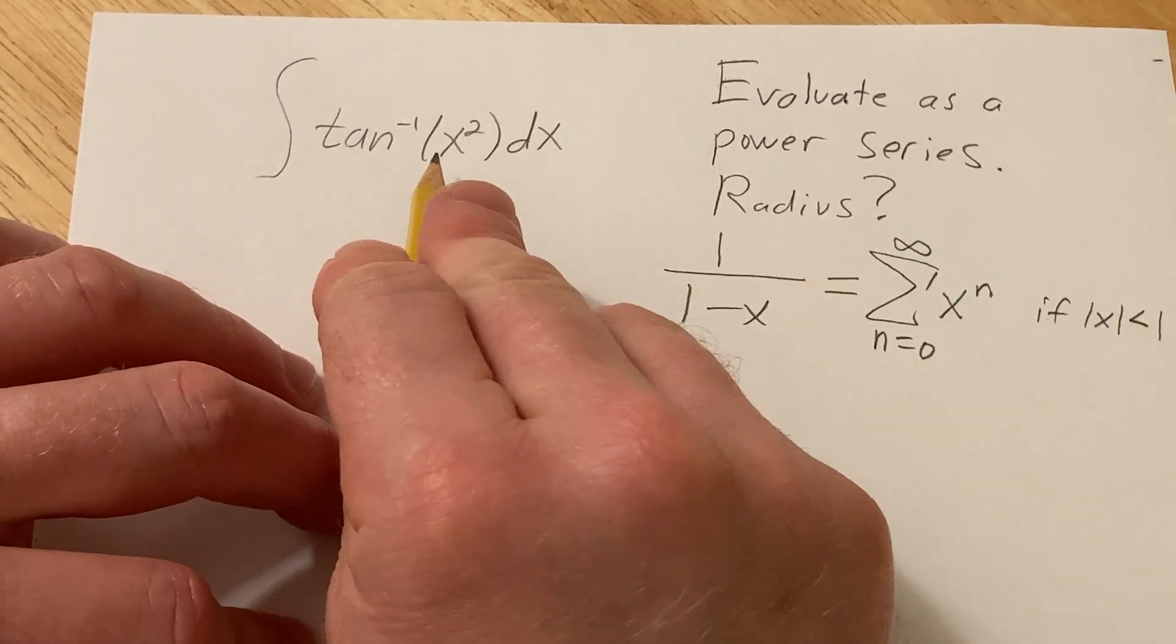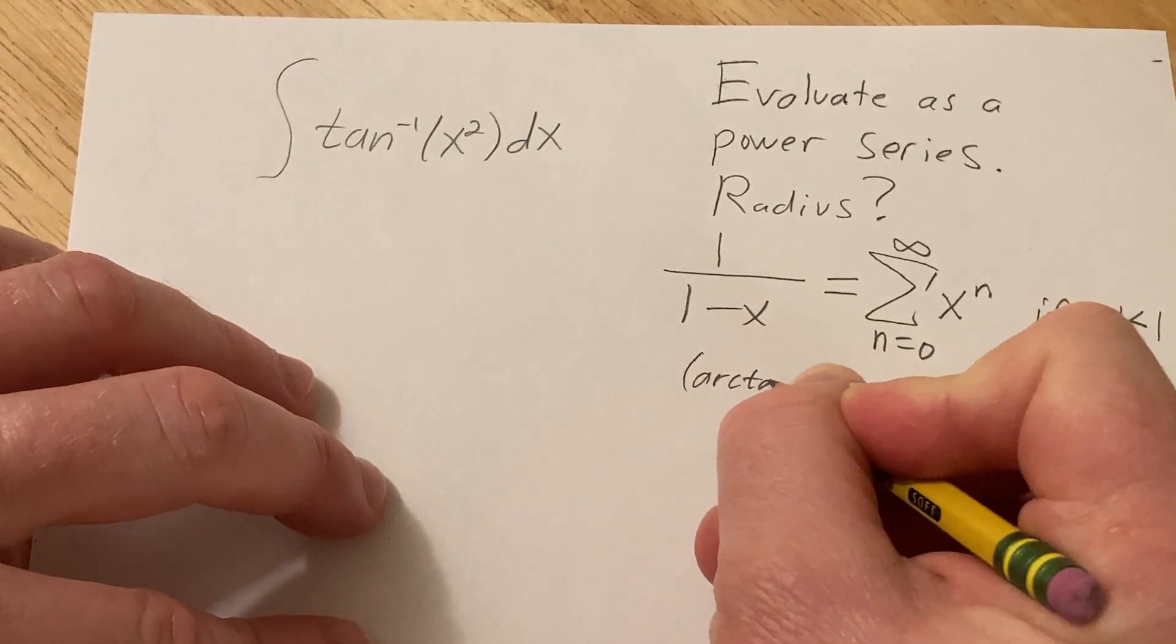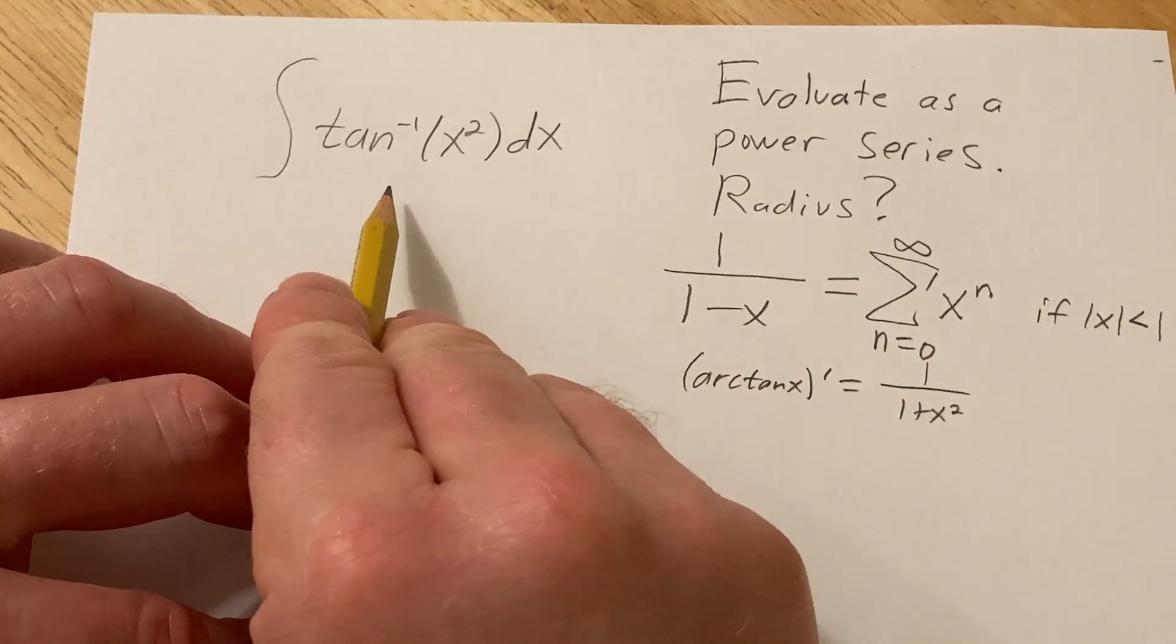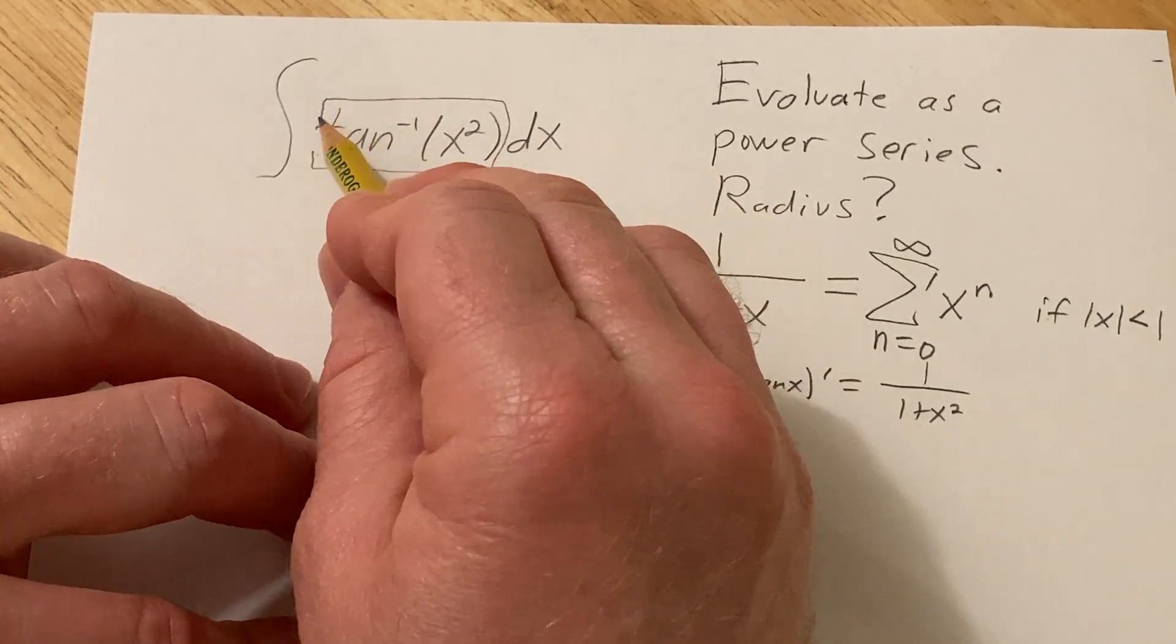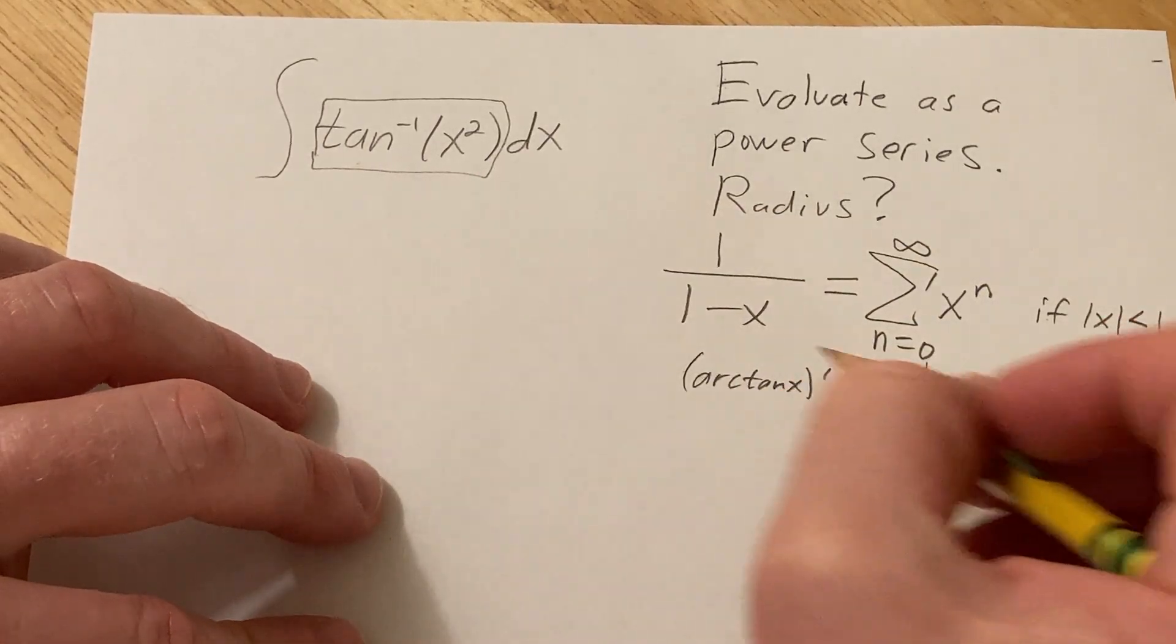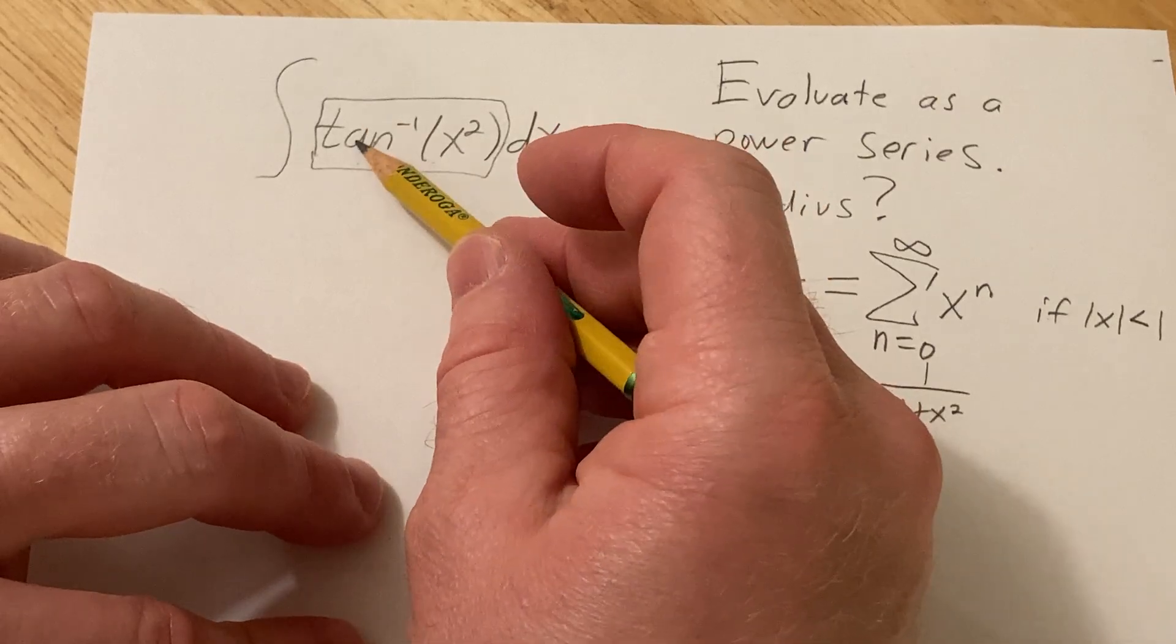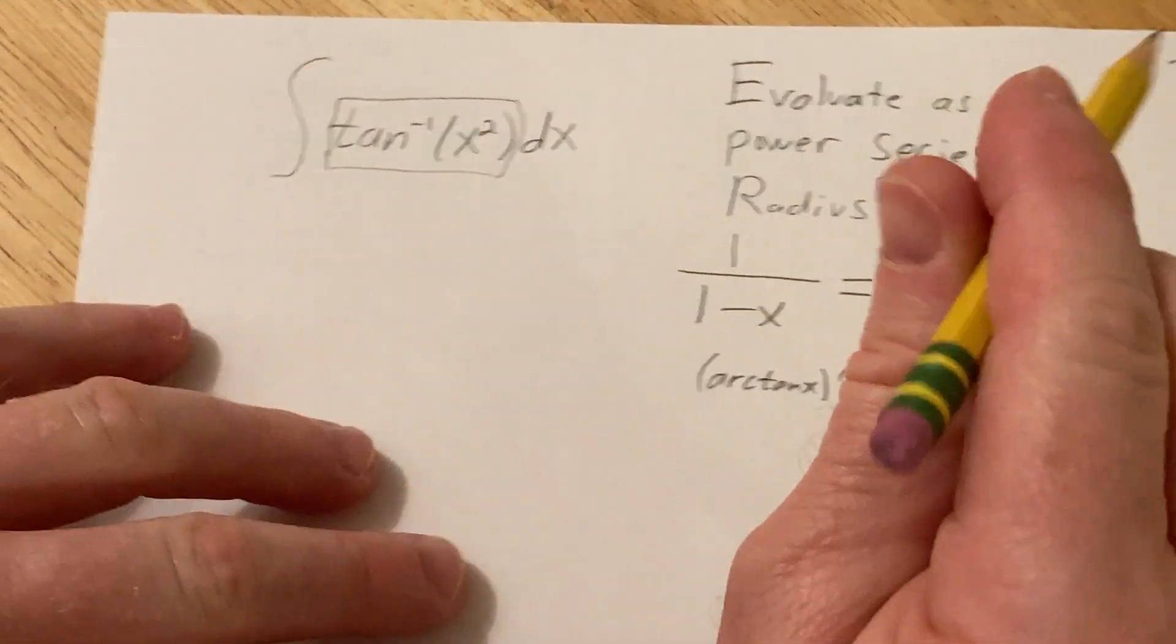So here we're going to recall that the derivative of arctan, which is tan inverse, is this. What we're going to do is take the derivative of this function, then find a power series for the derivative because we can find a power series for things that look like this using this formula. Then we'll integrate to get back the power series for this and integrate term by term. So that's a lot. Let's do it one step at a time.